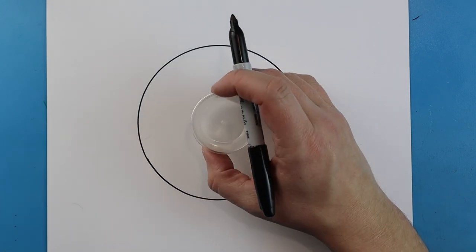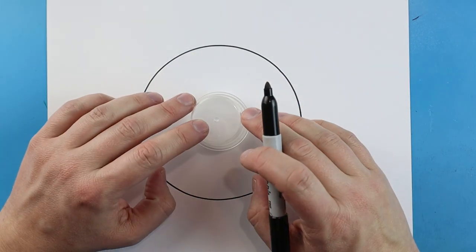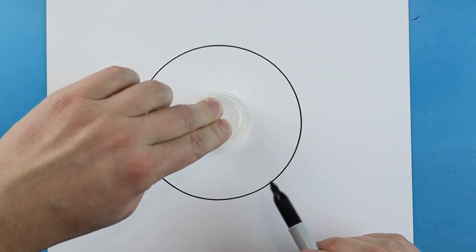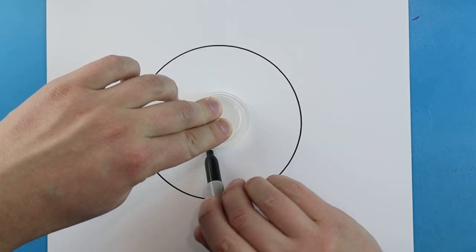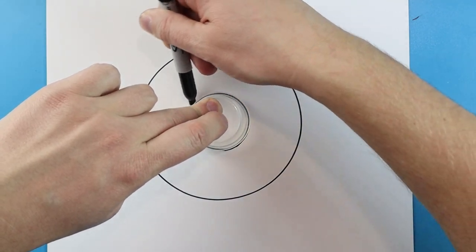Next I want to make another circle right inside of here. I'm going to use this little tiny circle shape right here. And we're going to trace a nice little circle all the way around here.